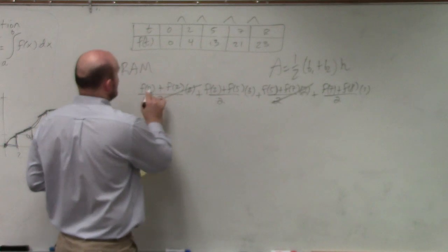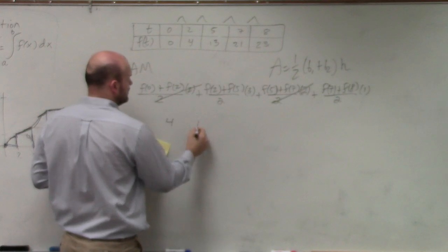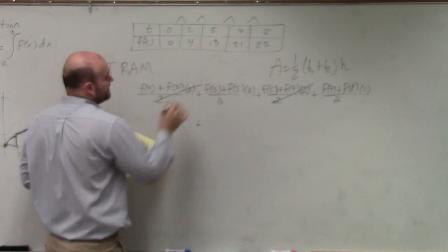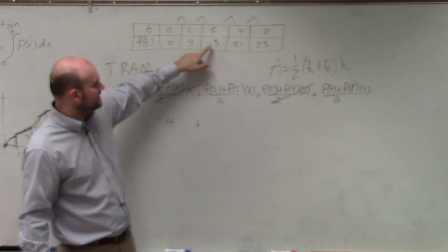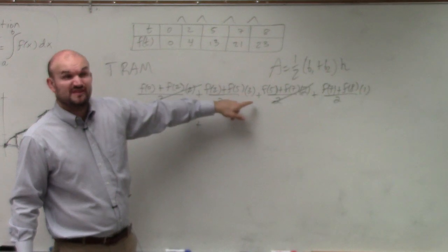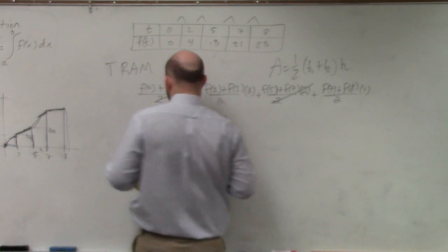So when I calculate this, I have f of 0, which is 0 plus 4, which is just 4. Plus here, I have f of 2 plus f of 5. So it's 2 plus 5, which is 17, times 3, which is 51. 51 divided by 2 is just going to be 51 divided by 2.